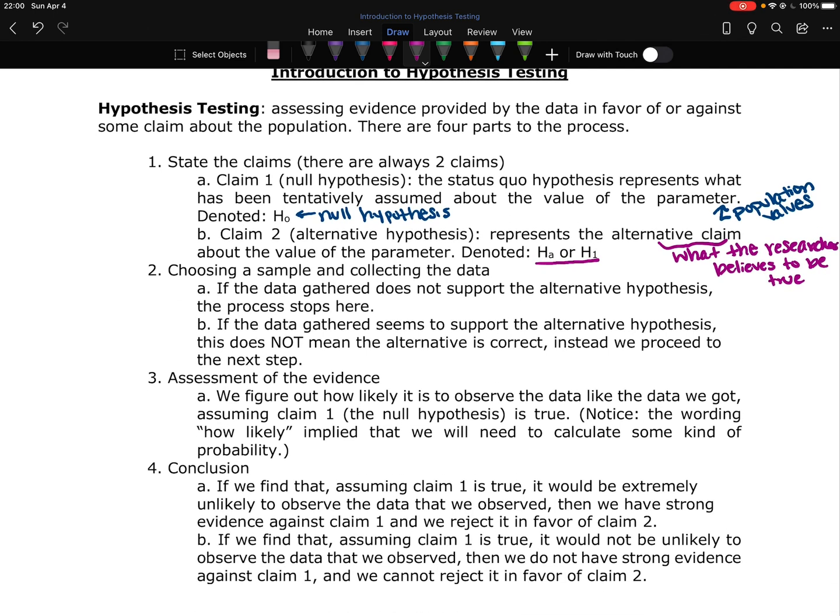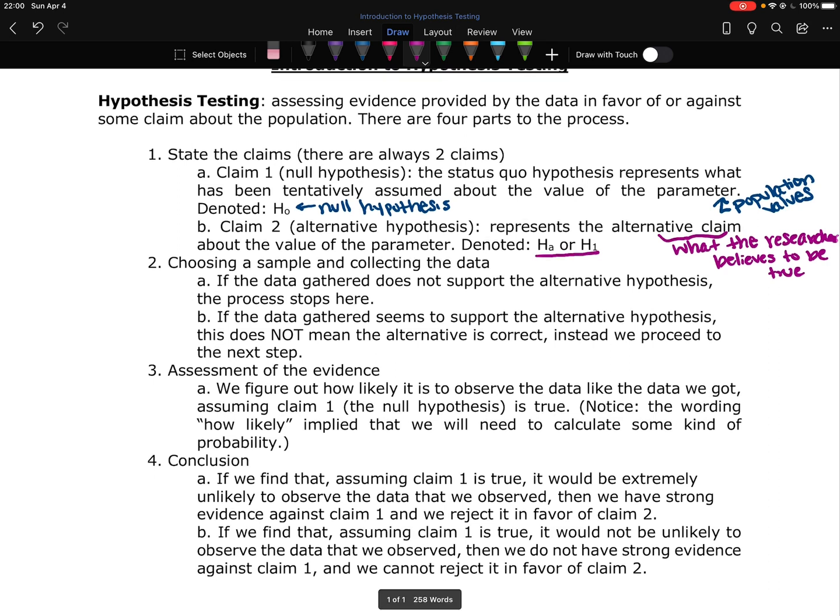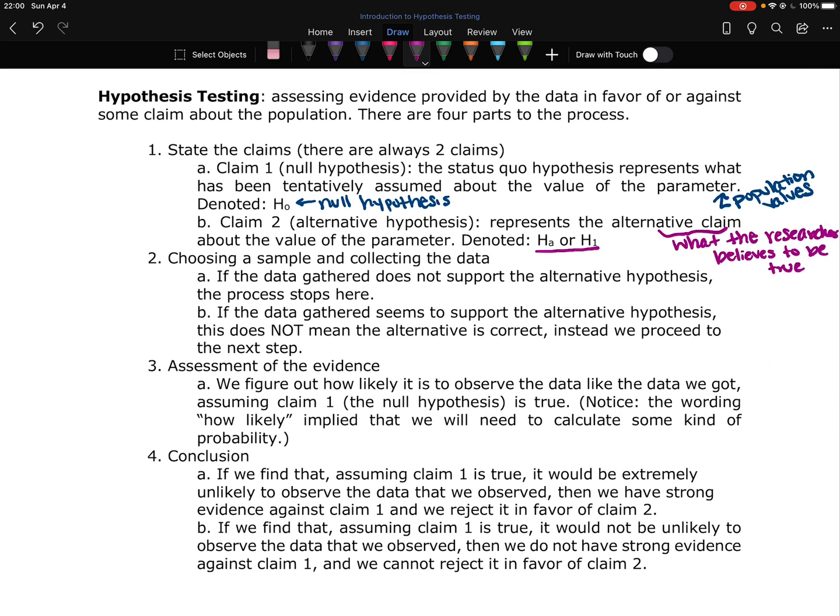The third step is to assess your evidence. This is where we figure out how likely it is to observe the data that we got if we assume that the null hypothesis was true. Notice the wording in this phrase said how likely, and that implies that we're going to use probability. So step three is what we're actually going to be focusing on in the next two parts of this section. This is what we're actually going to be doing the calculations for, how do we assess this evidence.